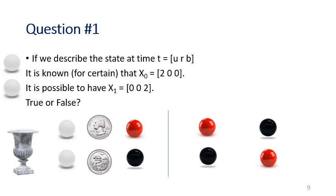We've seen examples of problems that can be modeled as a stochastic process. Let me ask you some questions to check your understanding — I'll give a short pause for you to think before giving the answer. First question: in the balls-in-the-urn game, it is known that X0 equals (2, 0, 0) — two unpainted balls, zero red, zero black. Is it possible to have X1 equals (0, 0, 2)? True or false?